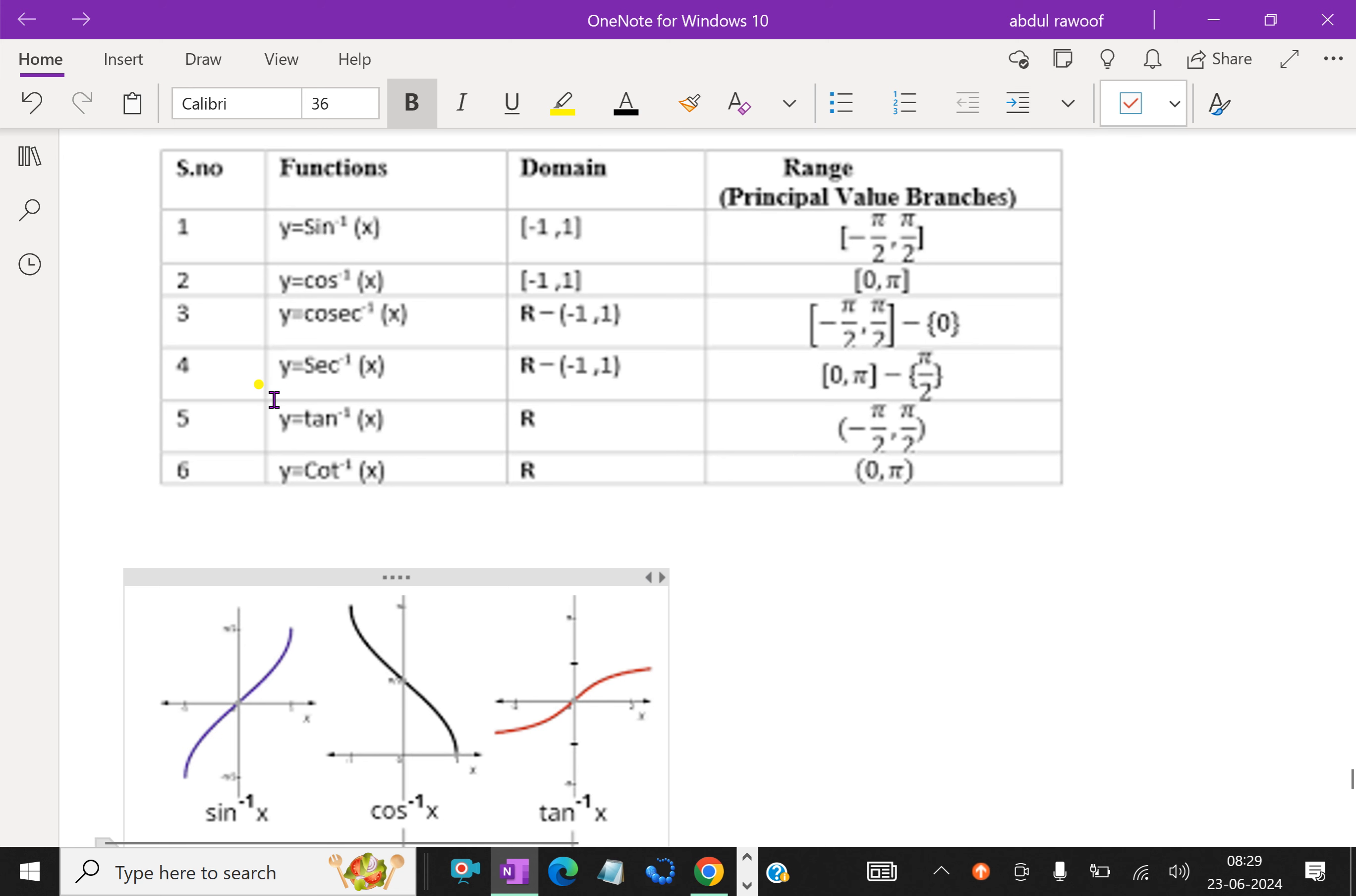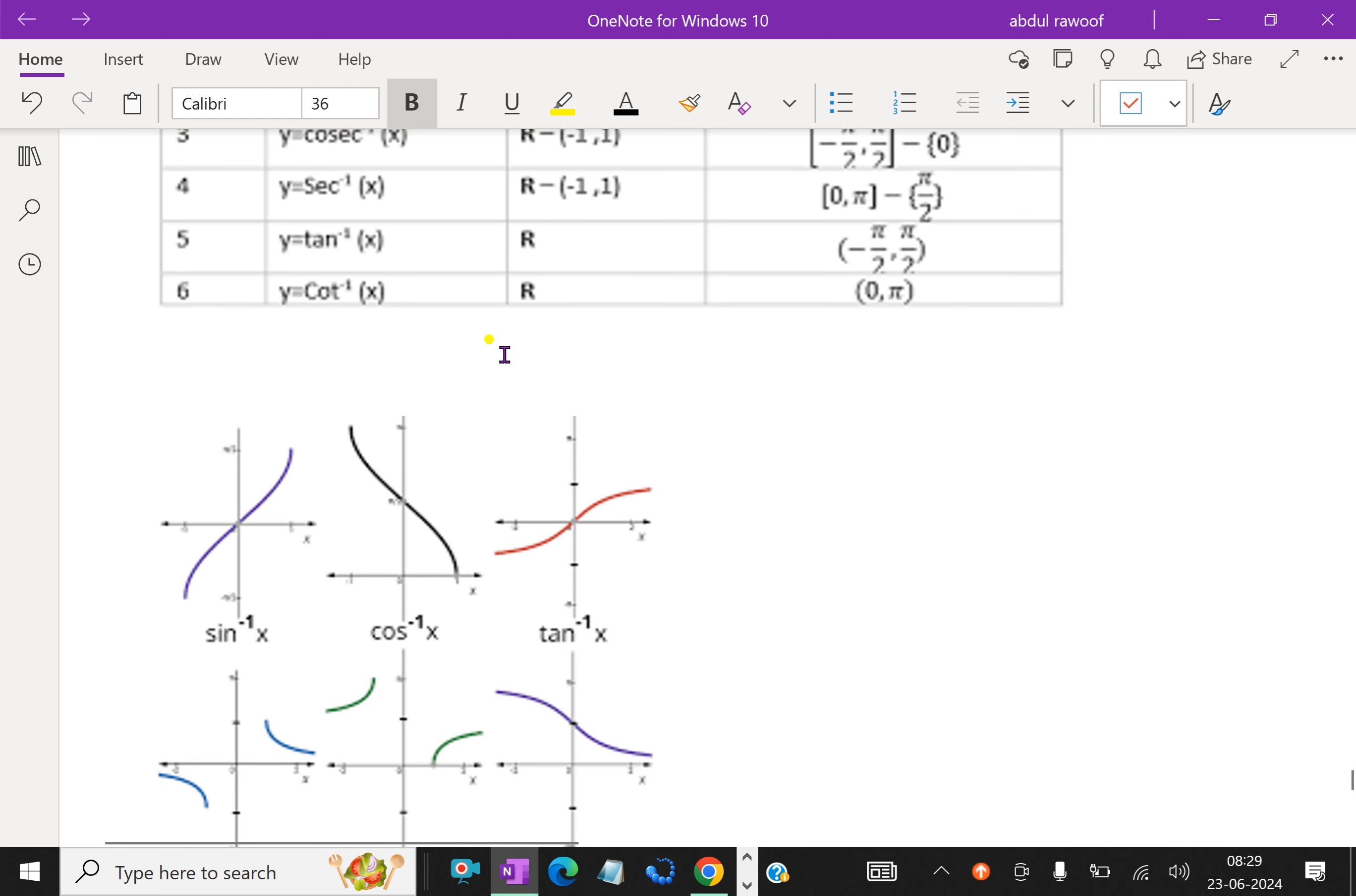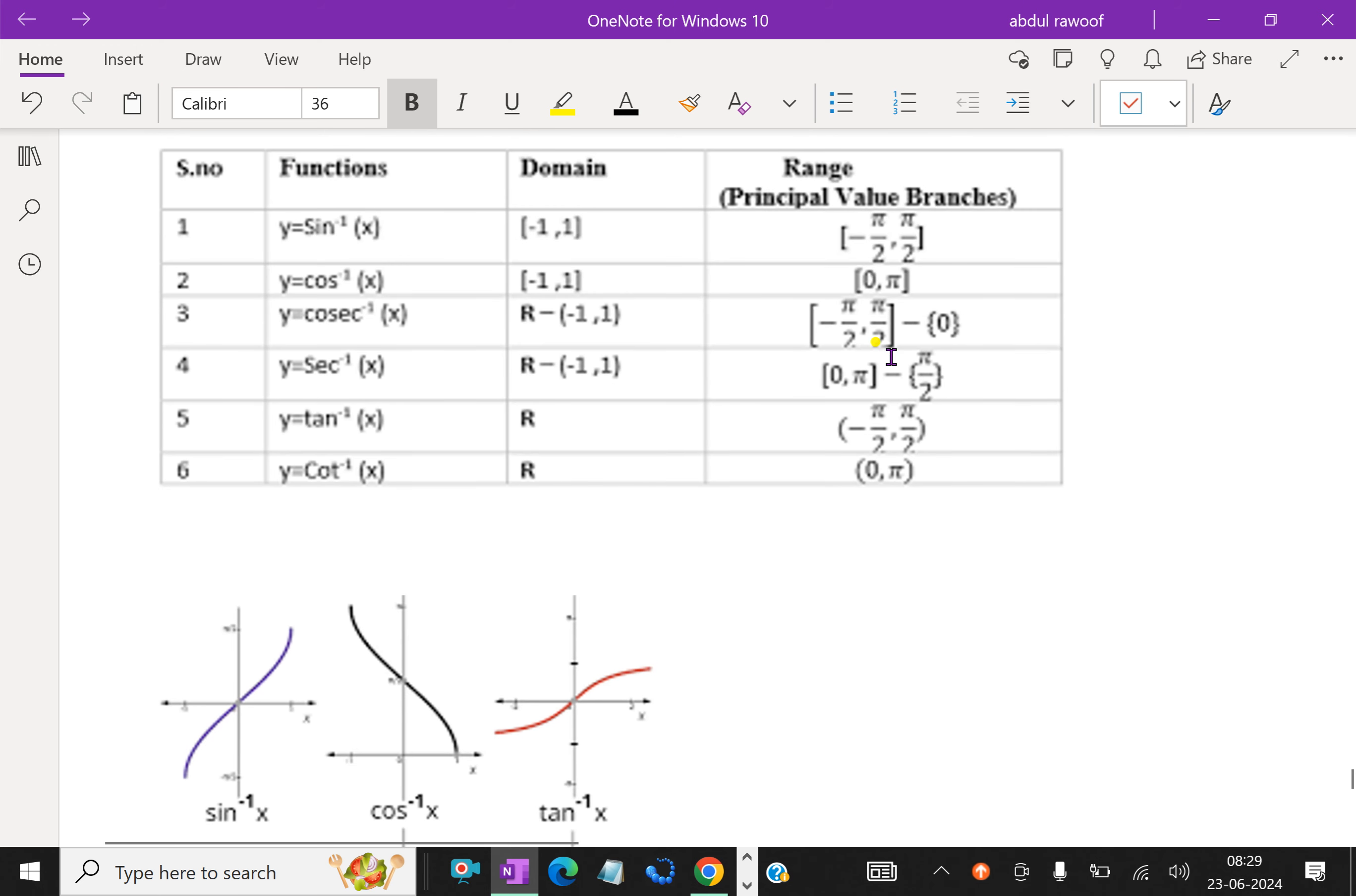Then, like y equals cosecant inverse x - look at this graph. And secant inverse x and cot inverse x. The domain and range is given here. This table is very useful.